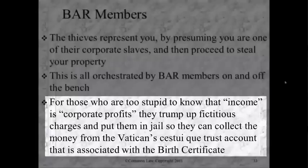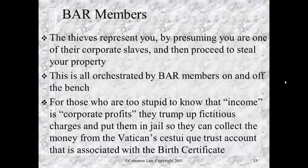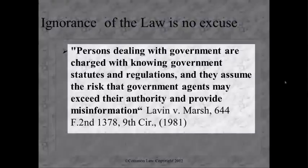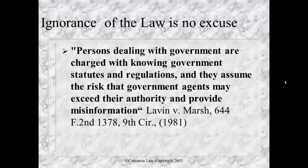This is all orchestrated by bar members on and off the bench. For those who are too ignorant to know that income is corporate profits, they trump up fictitious charges and put them in jail so they can collect money from the Vatican Cestui Que Trust account associated with the birth certificate. If they're going after you criminally, they're essentially saying you committed tax evasion — tax evasion is a fraud, it's a lie, and they can prove it. Ignorance of the law is no excuse. This is the U.S. Court of Appeals for the Ninth Circuit.